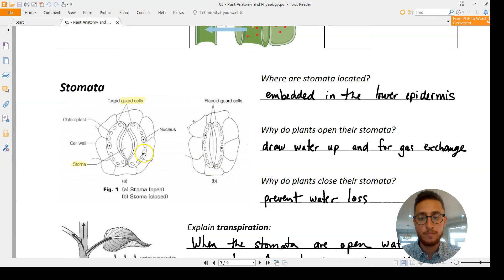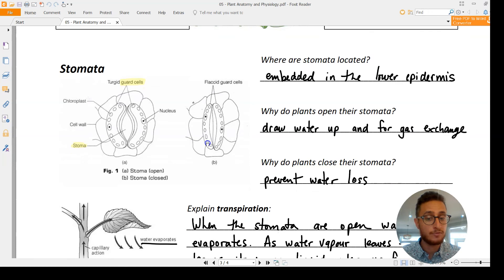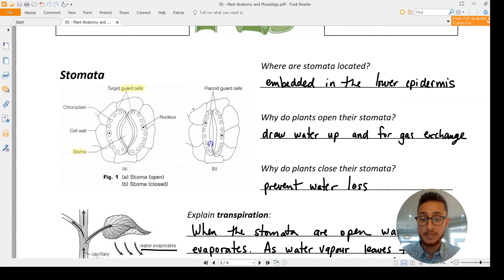One more quick look at those stomata. Here you can see the guard cells swollen up and open, which is allowing for gas exchange to happen through this pore. And when they become flaccid, meaning they've lost some of their water, they can seal up shut. So the stomata can open to allow photosynthesis to occur and can close when it's not going to occur.